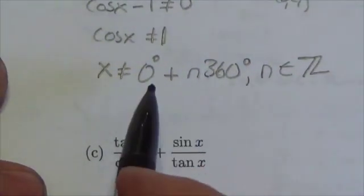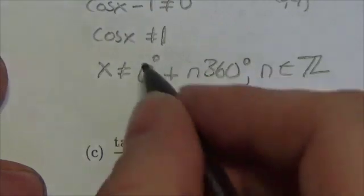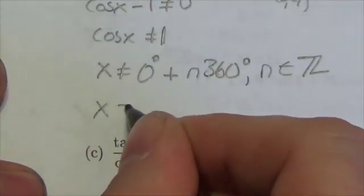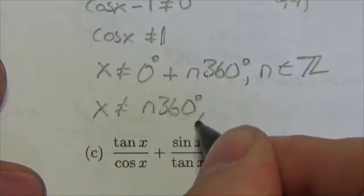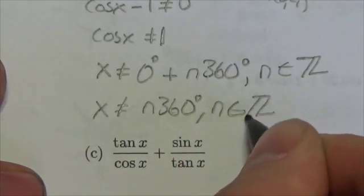And I might simplify this a little bit more because 0 plus n times 360 is just going to be x cannot equal n times 360 degrees where n is an element of the integers.